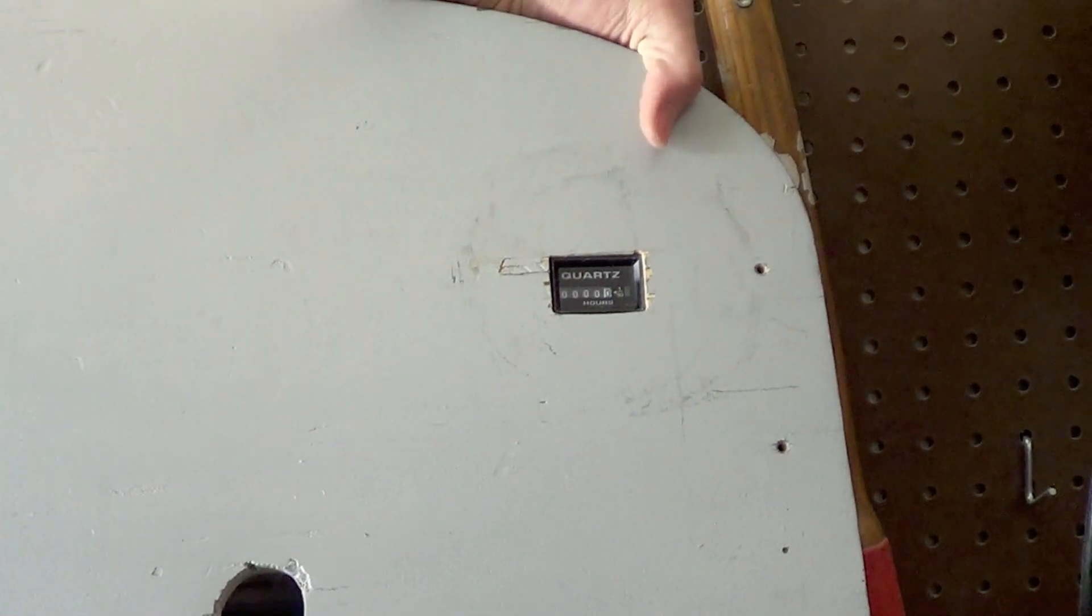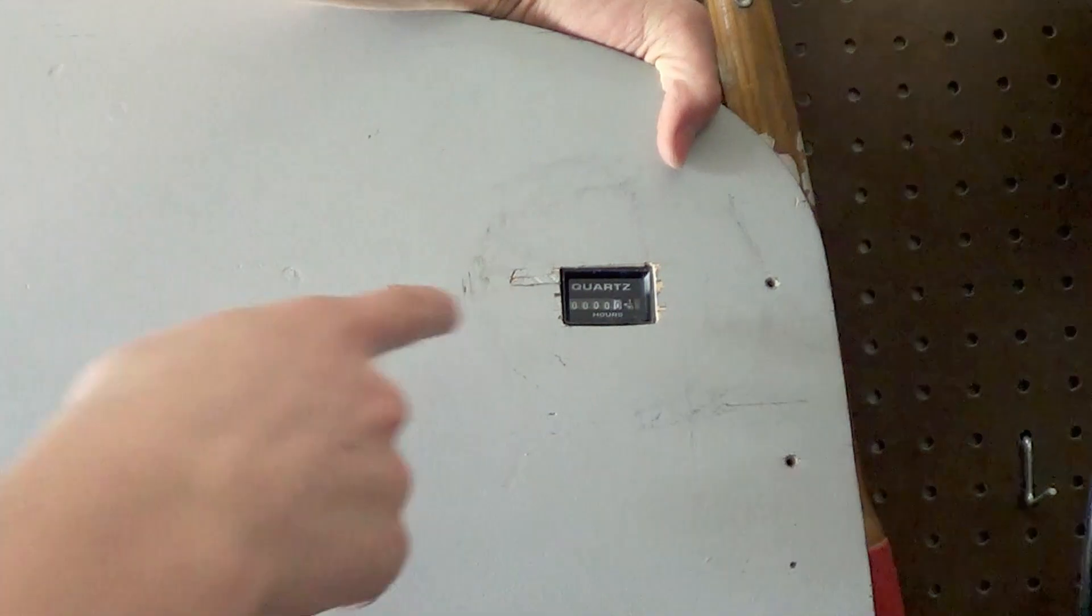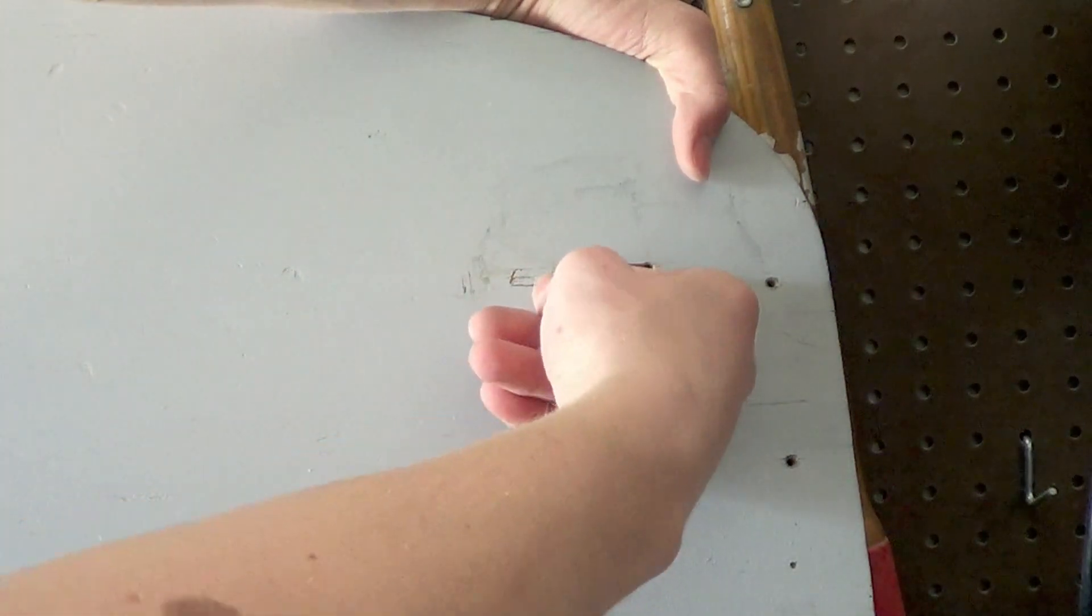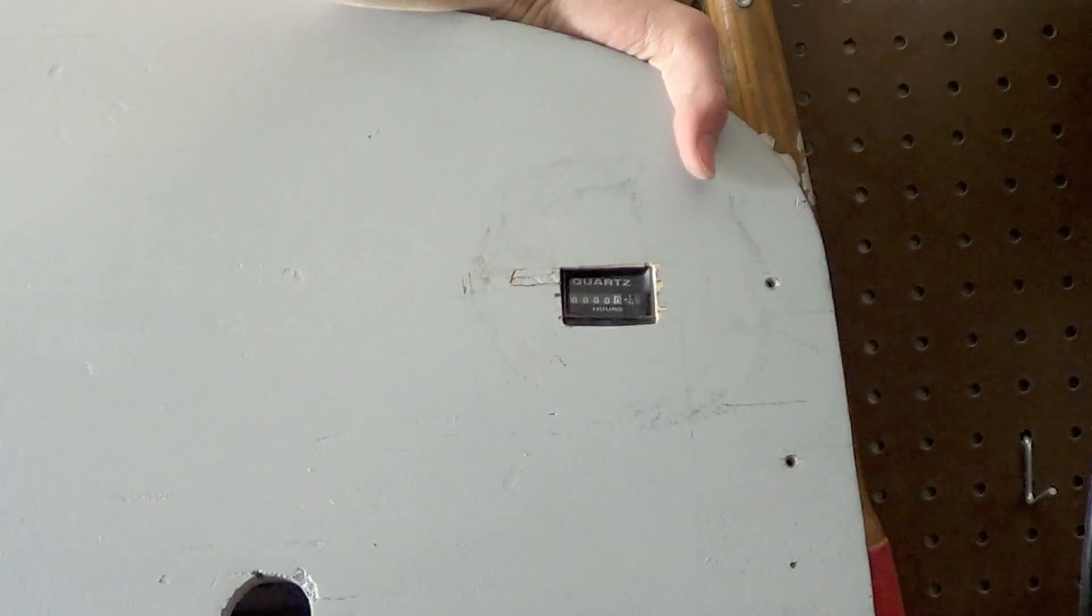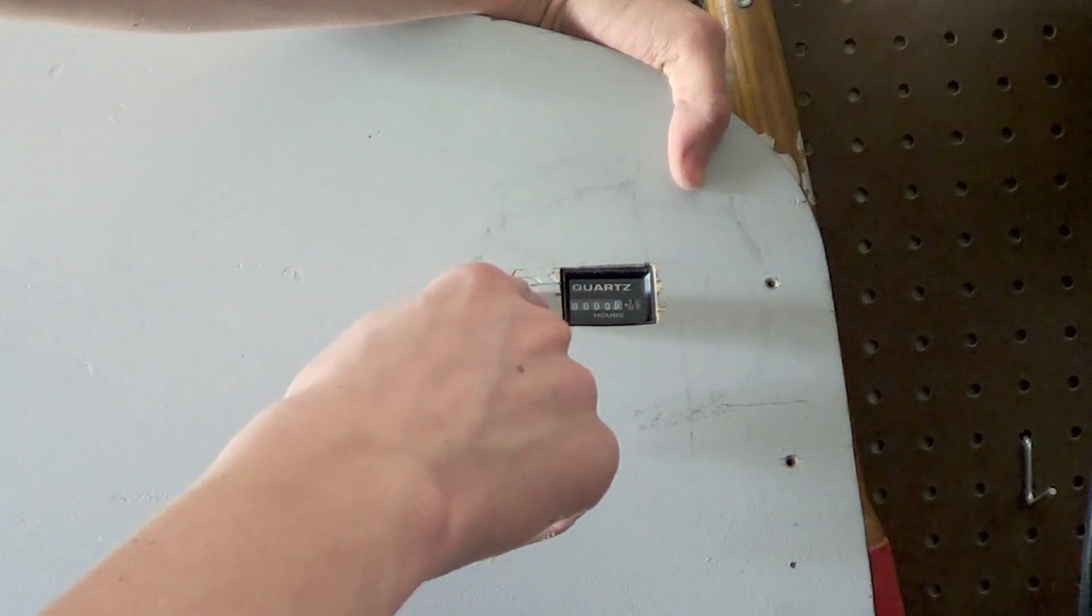and I don't want to go too much further, otherwise I will risk the board splitting when I cut it, or drill it right here. So I think this is pretty good, and then we will just simply drill the two holes over here.